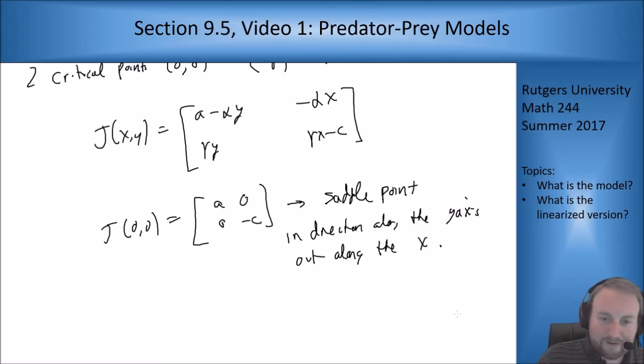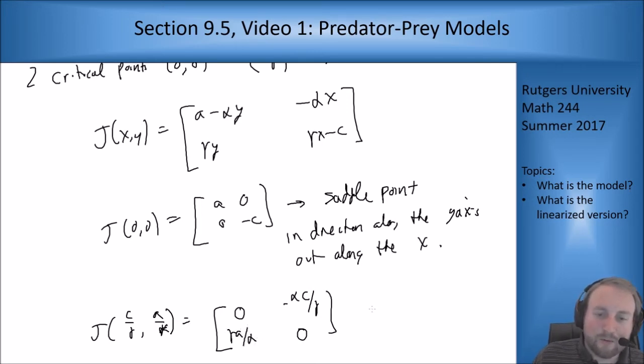Now let's look at the other point. If I look at j of c over gamma, a over alpha and plug that in I am going to get zeros on the diagonal because those are just going to vanish right away. And then alpha x is going to be alpha c over gamma with a negative sign and gamma y is going to be gamma a over alpha. And if we look at our setup what we're going to see is this is going to be a center because it's going to be r squared minus the determinant is going to be what the characteristic polynomial looks like. So it's going to be a center, we're going to get purely imaginary roots.